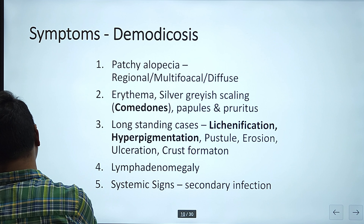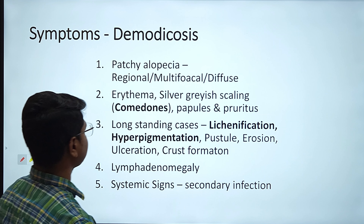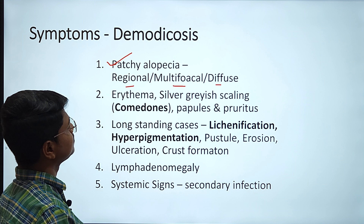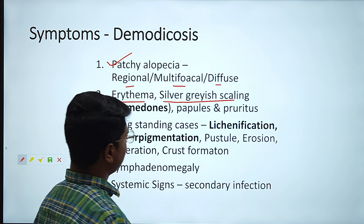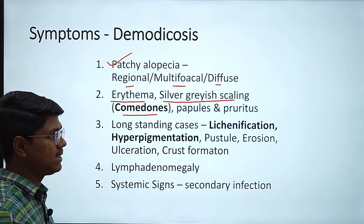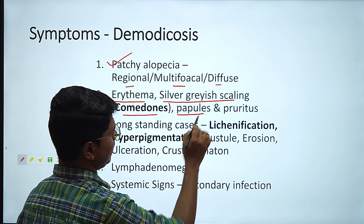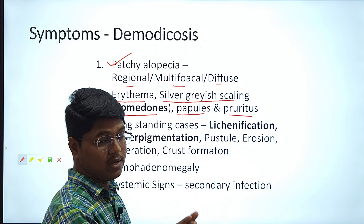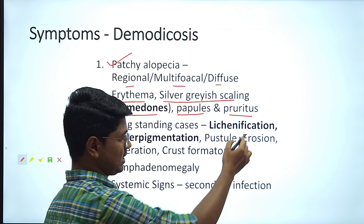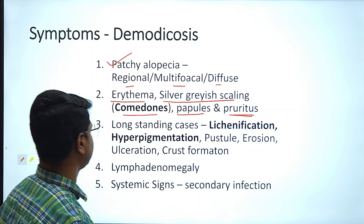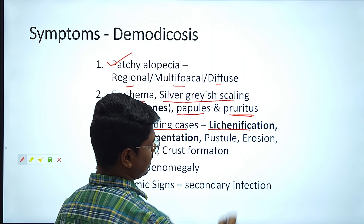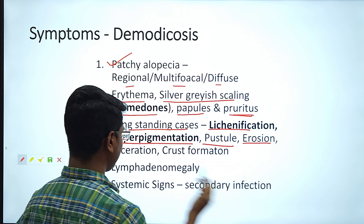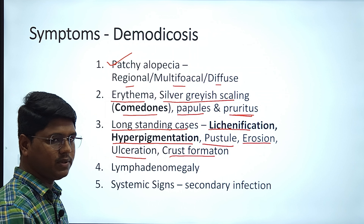Next we will go to demodicosis — this is a very important disease, mainly found in the summer season. In demodicosis, we will find patchy alopecia; it may be regional, multifocal, or diffuse. We will find erythema, silver-to-gray scaling known as comedones, and some degree of pruritus. Comparing with scabies: in scabies, itching is very intense, but in demodicosis the degree is less. In long-standing cases, it may become lichenified — thickening of the skin and hyperpigmentation — then pustules, erosions, and crust formation.